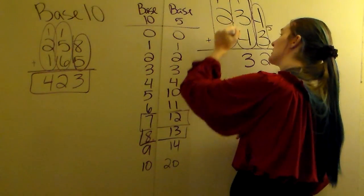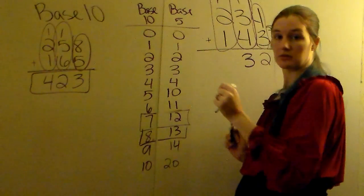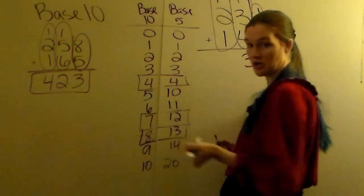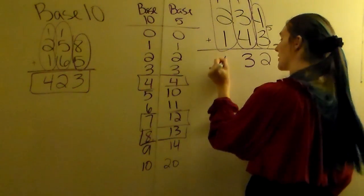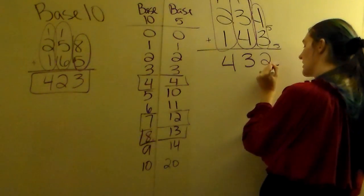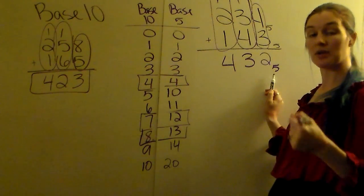Then you're going to add again. 1 plus 2 plus 1 would be 4. You're allowed a 4 in base 5, and if not you still want to check your chart to make sure 4 is still 4. The only thing missing from this answer is your base. Make sure you put your subscript of your base so we know which base you're dealing with.